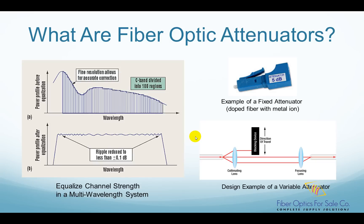This picture shows an example of a fixed optical attenuator. The attenuation level is fixed at 5 dB, which means it reduces optical power by 5 dB. This attenuator has a short piece of fiber with metal-iron doping that provides a specified attenuation. There are many different mechanisms to reduce optical power.